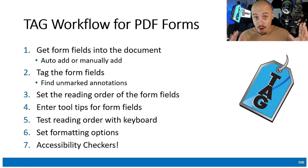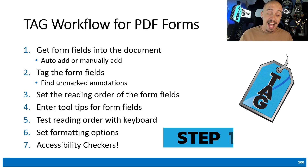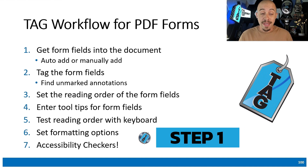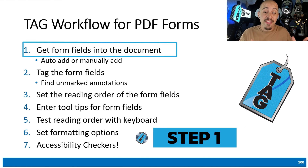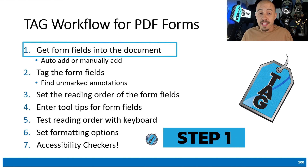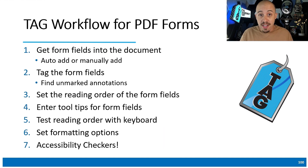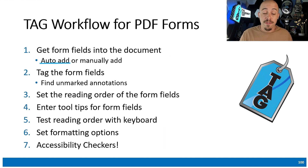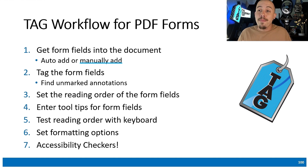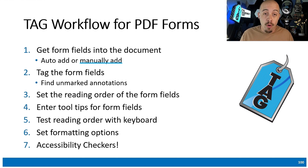Step one of the accessibility guide method for tagging PDF forms is to first get the form fields into the document. There are two ways to do this: you can auto-add them using the prepare a form tool from the options, or you can manually add them from the prepare form tool.